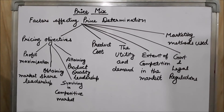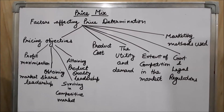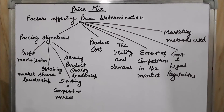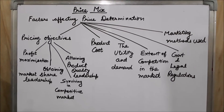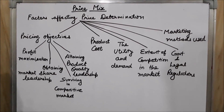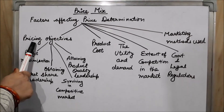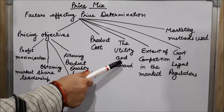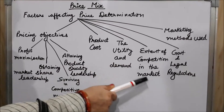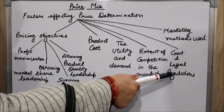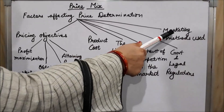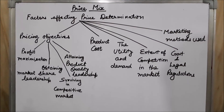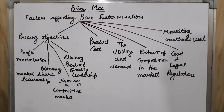For example, a firm providing free home delivery to consumers will charge a higher price for goods. So students, the factors I discussed regarding price fixation are: pricing objectives, product cost, utility and demand, extent of competition in the market, government and legal regulations, and marketing methods used. If you have any problem with this topic, discuss with me right now. Thank you, students.